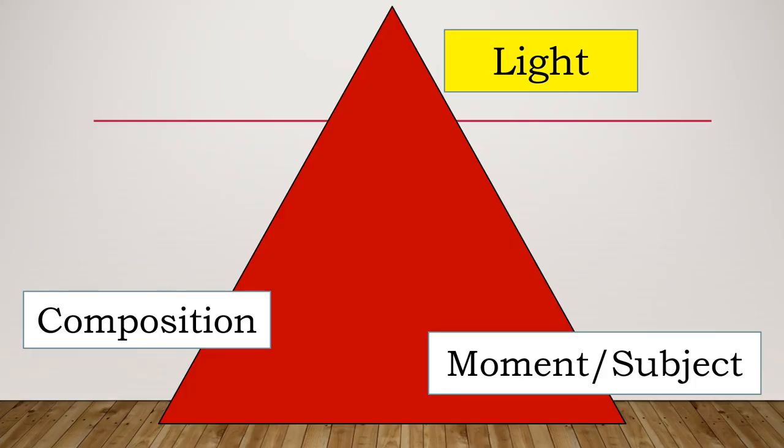Thus far in the series we've spoken about quite a few of the basics. Number one being you're taking a photograph of light falling on something. This is an image I've used before of water and light falling on that water. We've also spoken about the Trinity of Photography — light, composition, the moment, and subject are what make up your photograph.